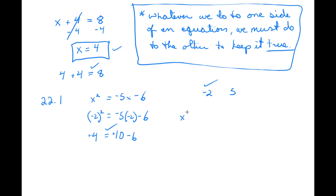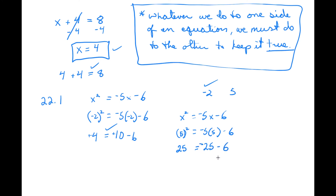Let's try 5: x squared equals negative 5x minus 6. So 5 squared equals negative 5 times 5 minus 6. Five squared is 25. Negative 5 times 5 is negative 25, minus 6 equals negative 31. Does 25 equal negative 31? No, that's not true. So 5 is not the answer — negative 2 is what works.